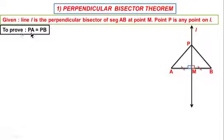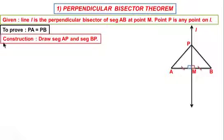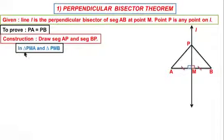We have to prove PA is equal to PB. Construction: Draw segment AP and segment BP. In triangle PMA and triangle PMB.